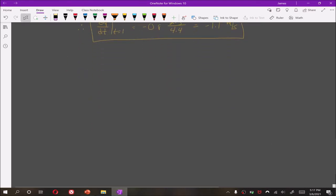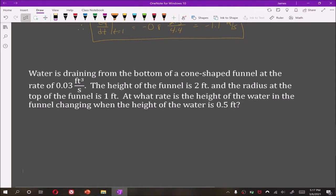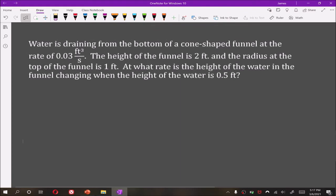For our next example, consider water draining from the bottom of a cone shaped funnel at the rate of 0.03 cubic feet per second. The height of the funnel is 2 feet, the radius at the top of the funnel is 1 foot. At what rate is the height of the water in the funnel changing when the height of the water is half a foot?